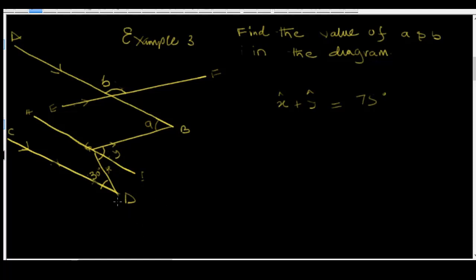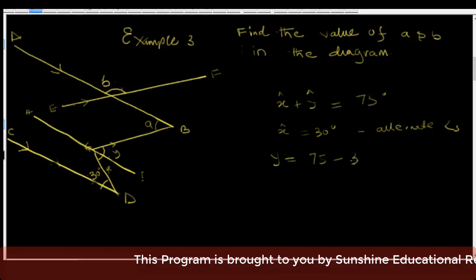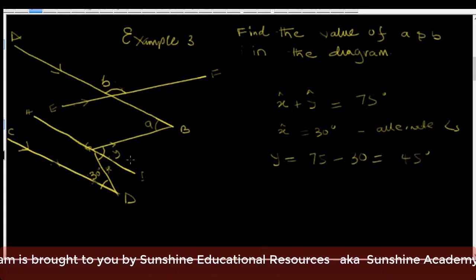Line CD is parallel to line HI. Angle d is 30 degrees, so angle x equals 30 degrees because x and the 30 degree angle are alternate angles. If angle x is 30 degrees, then angle y equals 75 minus 30, which is 45 degrees.